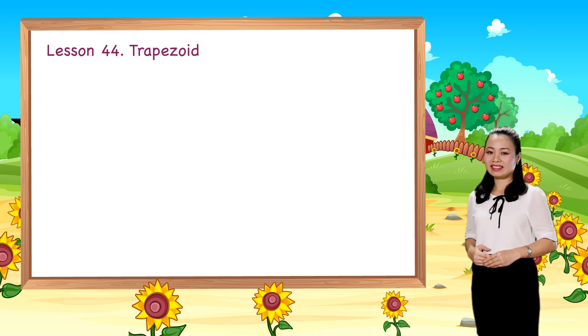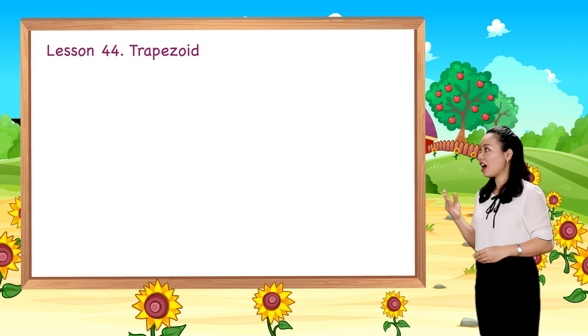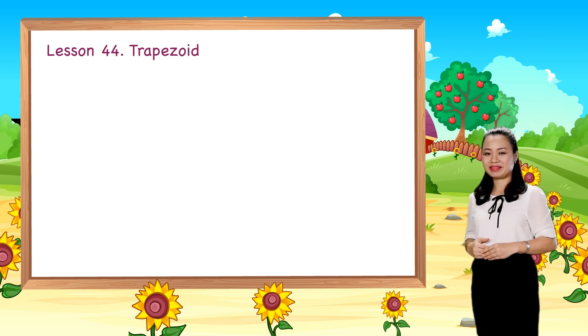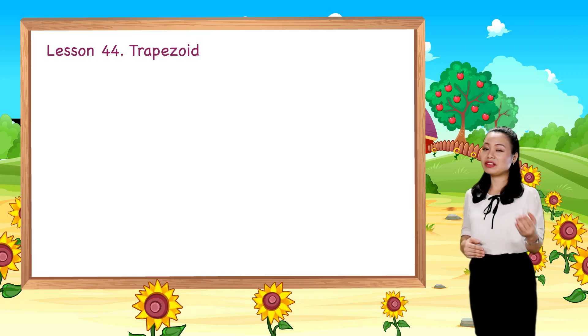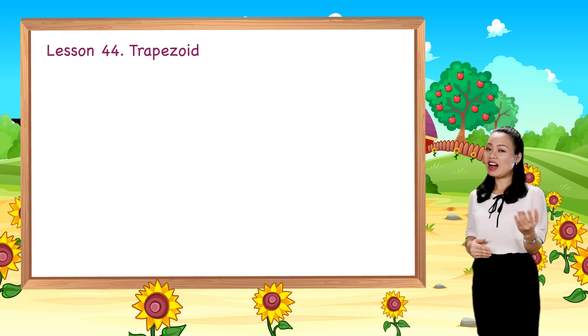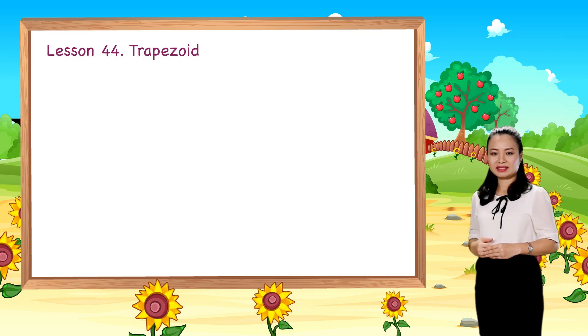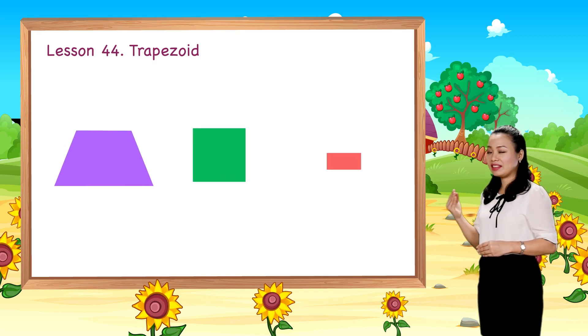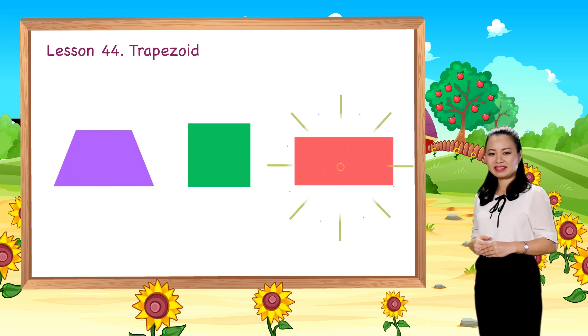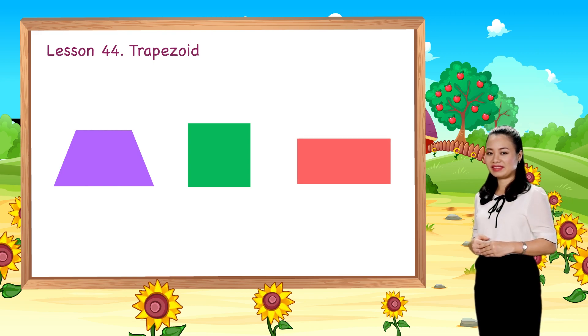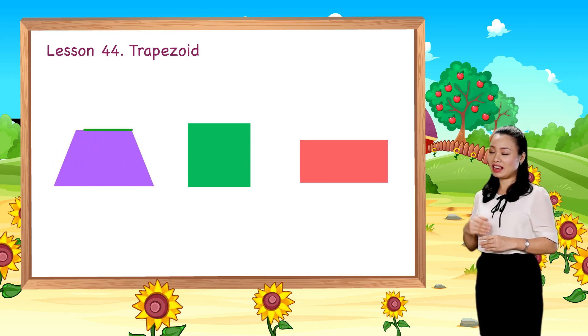Now you can identify a trapezoid. Let's have some practice. I will ask you questions, then you give me your answers. Alright, let's go. Which shape is a trapezoid? This shape is a trapezoid.